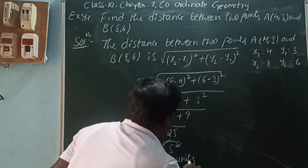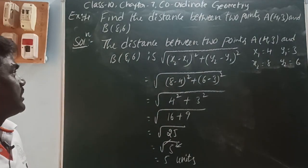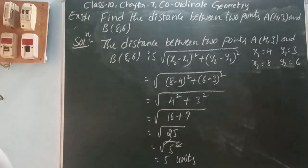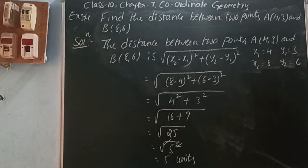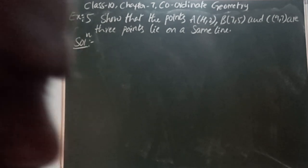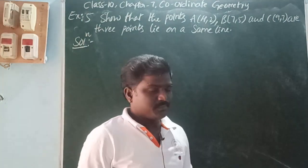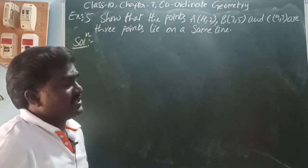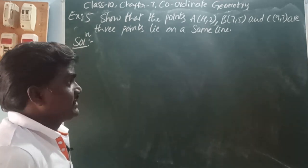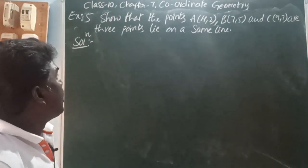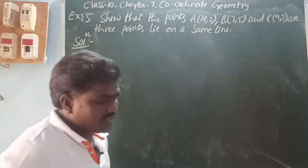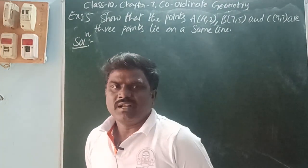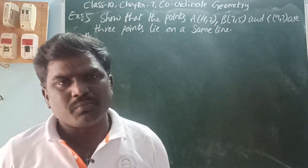So the distance between A(4, 3) and B(8, 6) is 5 units. Next, Example 5: show that the points A(4, 2), B(7, 5) and C(9, 7) lie on the same line. The points which lie on the same line are called collinear points.